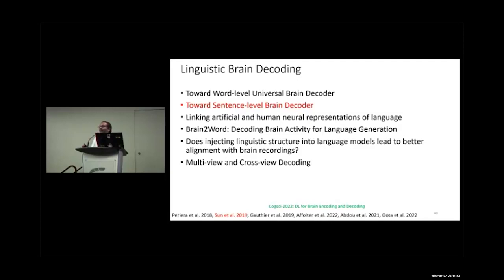One application is brain-computer interfaces. If we take a person's brain activity while reading and try to decode it, a low correlation might indicate the person is not interpreting the paragraph as well as others. Building a decoder model per individual subject, some subjects achieve 80–90% decoding accuracy while others only achieve 50–55%, suggesting a problem in interpreting or skill differences.